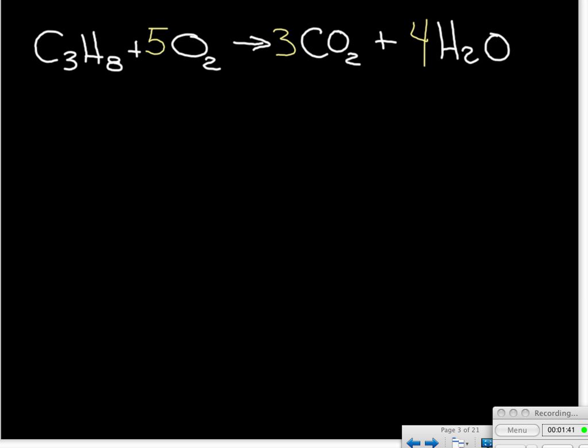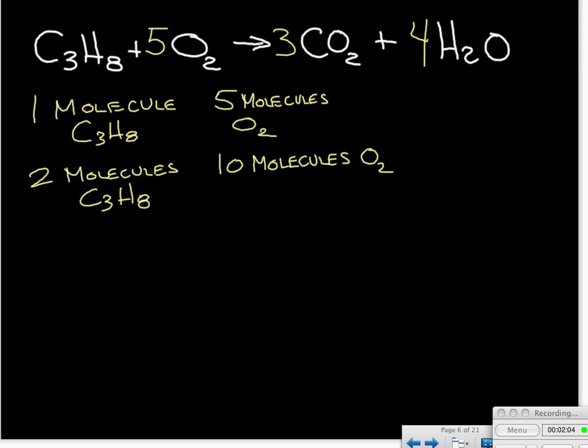When we go to interpret this information, we could interpret this as one molecule of propane reacts with five molecules of oxygen - those are our ingredients in our recipe. Now, we don't always react just one molecule of propane. Most of the time we don't because there's so many molecules in any sample of matter. But what if we had two molecules of propane? Well, you could pretty quickly see that if we double the number of molecules of propane, we're going to double the molecules of O2 that we need.